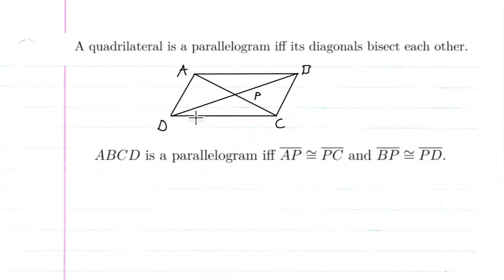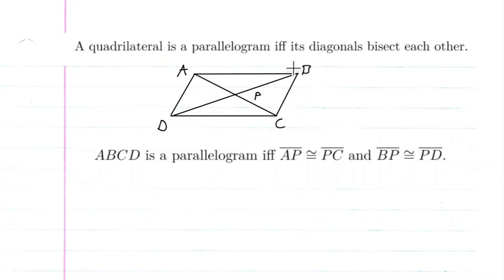We're going to prove that a quadrilateral is a parallelogram if and only if its diagonals bisect each other. We want to show that ABCD is a parallelogram if and only if AP is congruent to PC and BP is congruent to PD.